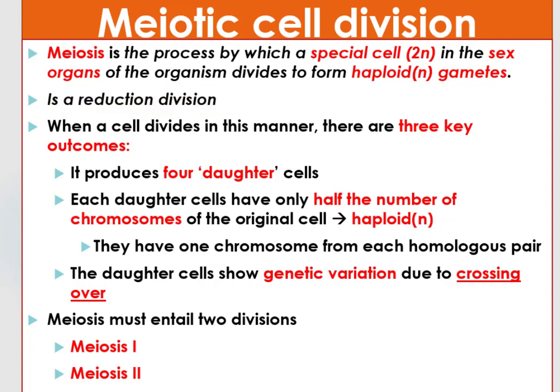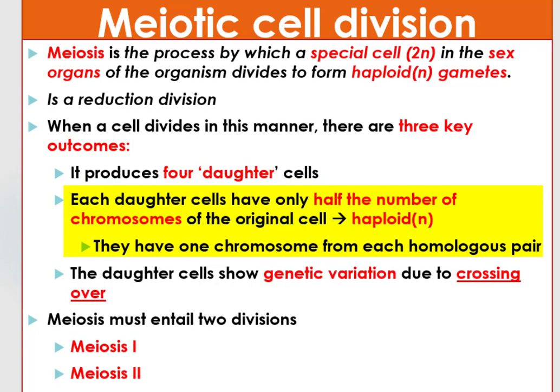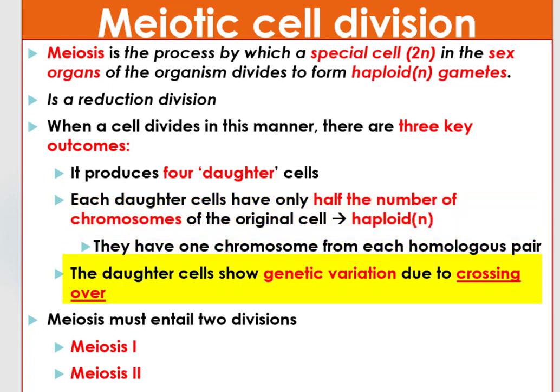When a cell divides in this manner, there are three key outcomes. The first outcome is that this process produces four daughter cells. The second outcome is that each daughter cell is haploid, having only half the number of chromosomes of the original cell — meaning each haploid cell has one chromosome from each homologous pair. The third key outcome is that the daughter cells show genetic variation due to crossing over. Meiosis entails two divisions to produce four daughter cells: meiosis 1 and meiosis 2.